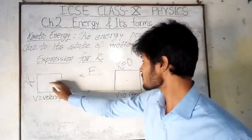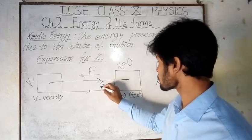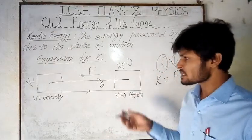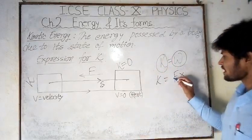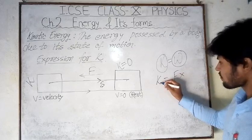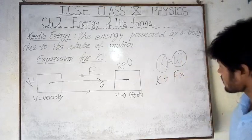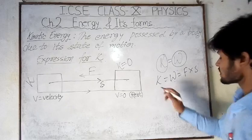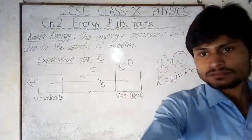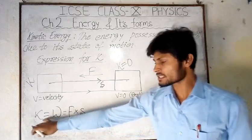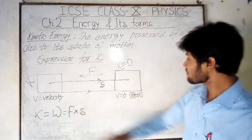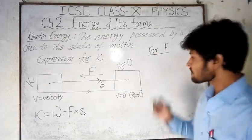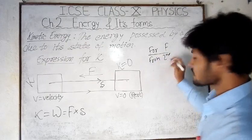The direction of force is opposite to the direction of displacement, meaning it is negative work done. However, since work done is a scalar quantity, we don't take the negative sign. So kinetic energy K equals the work done W, which equals force F into displacement s. Now we have to find the value of force. For this we use the second law of motion.